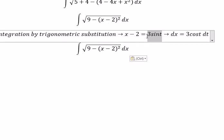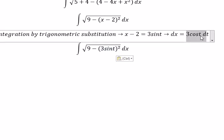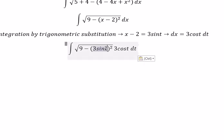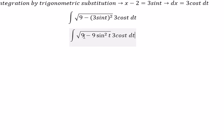We put this one in here. dx we change for this one. This one we change to 9 sine t squared. The square root of number 9 you got number 3.